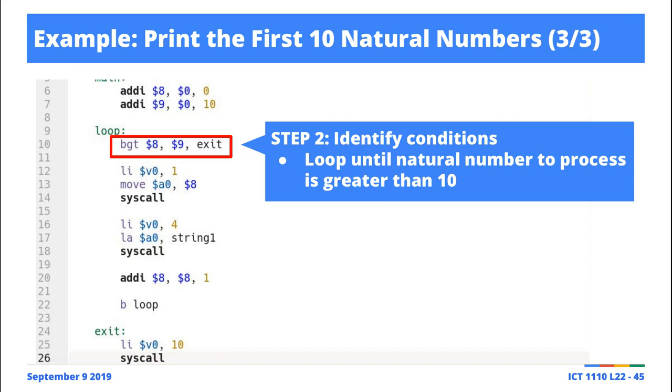We know that we want to break out of the loop when the natural number, the value of the natural number is greater than 10. So you notice here at line number 10, we've implemented our condition. This is BGT. Whatever is going to be in register number 8, compare it against what is in register 9. What is in register 9 is 10 here.